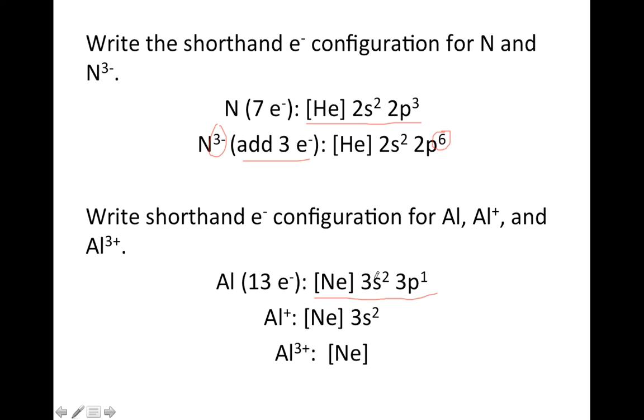Then it says Al⁺. So we got to remove an electron and we have to decide should we remove the 3S or the 3P. You remember from the previous slide, remove the valence P electrons first. So get rid of the 3P, one of those.